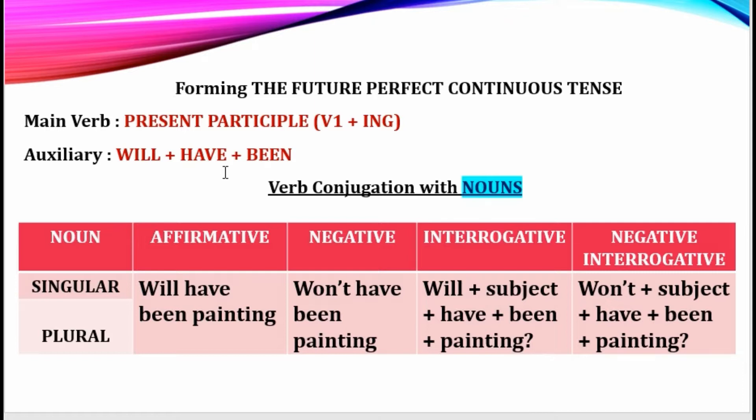Don't get confused: with singular subjects we are using 'have.' We have to use 'have' because we have the auxiliary 'will.' All modals take the first form of the verb only. So we are not supposed to use 'has' or 'had' — we have to go with 'will have.' Don't get confused; of course it seems really incorrect at first.